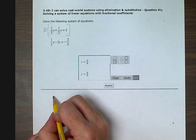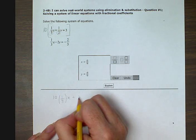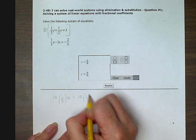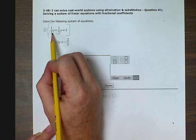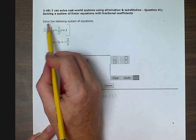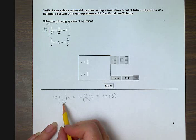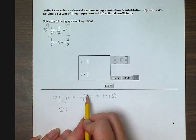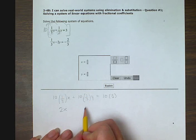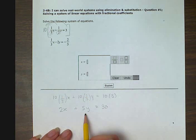I'm going to write that down here. 10 times one-fifth x plus 10 times one-half y equals 10 times three. I multiplied it, distributed it to all the terms, and now I can do the multiplication. 10 times one divided by five gives me two x. 10 times one divided by two gives me five y. And 10 times three gives me thirty. That is so much better looking than this one.